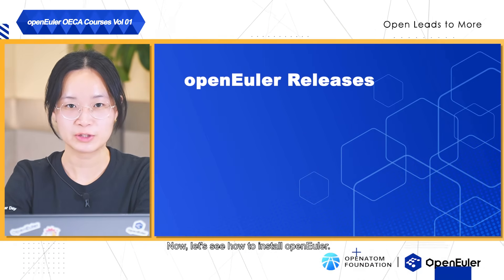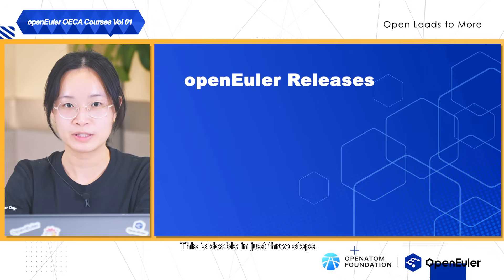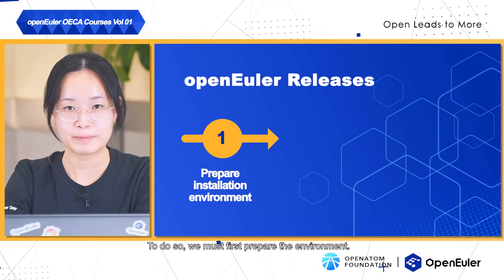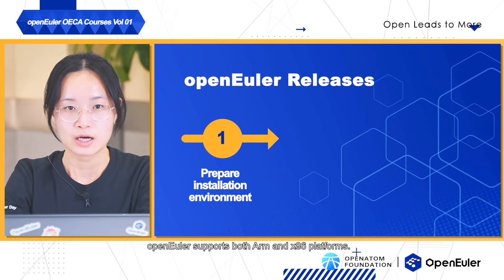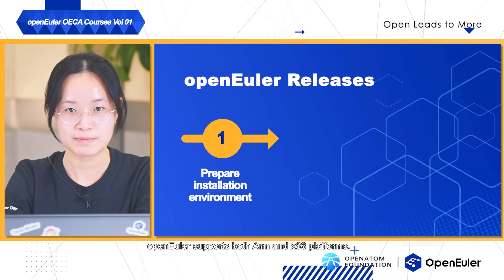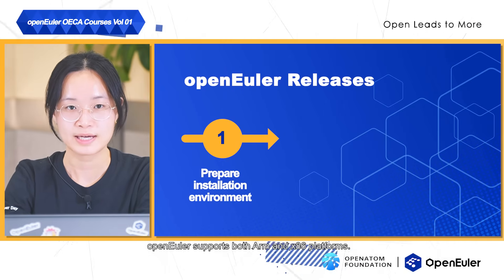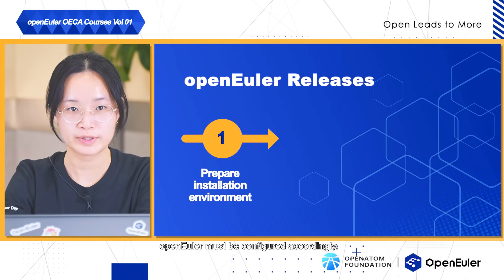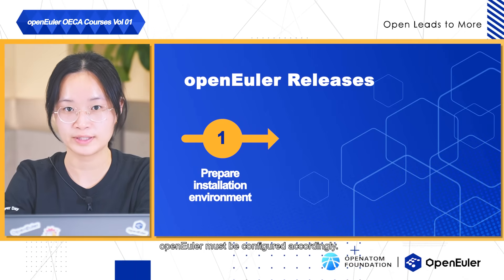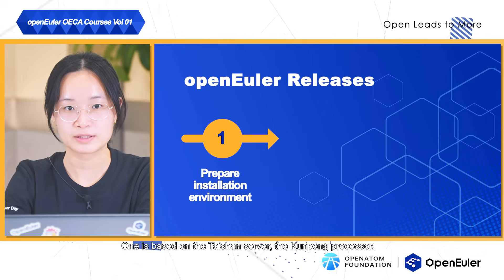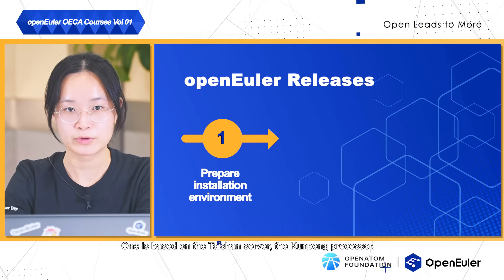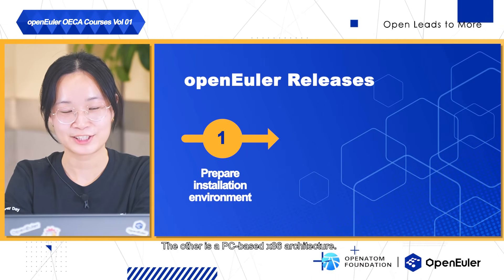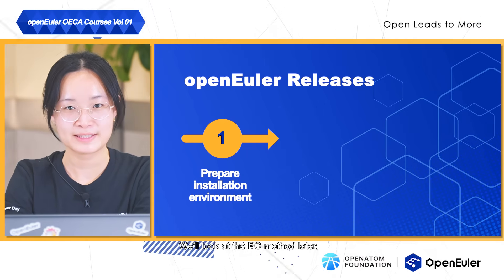Now let's see how to install OpenEuler. This is doable in just three steps. We must first prepare the environment. OpenEuler supports both ARM and x86 platforms. Since these two platforms are incompatible with each other, OpenEuler must be configured accordingly. One is based on the TaiShan server with the Kunpeng processor. The other is the PC-based x86 architecture. We'll look at the PC method later.